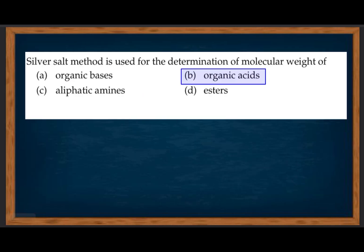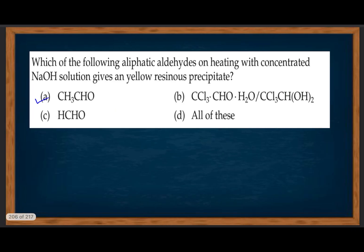Silver salt method is used to determine molecular weight of organic acids (RCOO⁻ type). Which of the following aliphatic aldehydes on heating with concentrated sodium hydroxide solution gives yellow resin as precipitate? This involves aldol condensation.